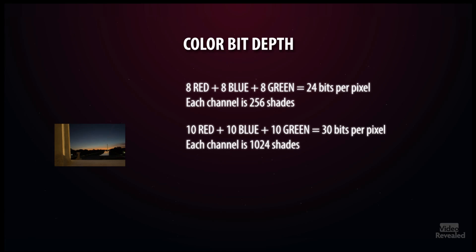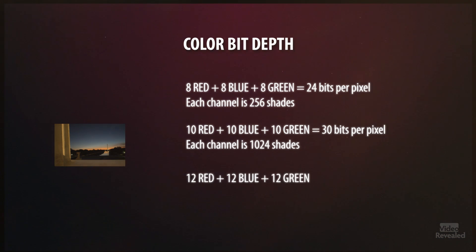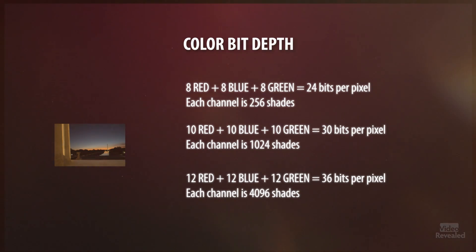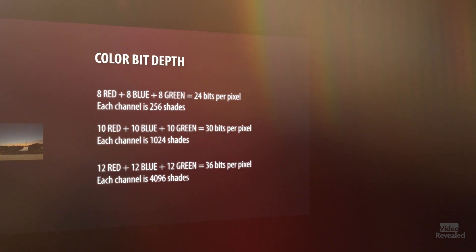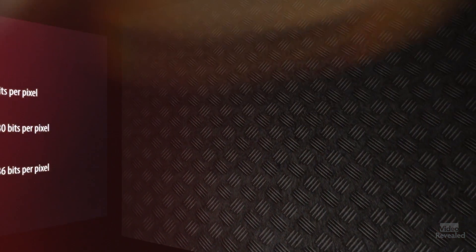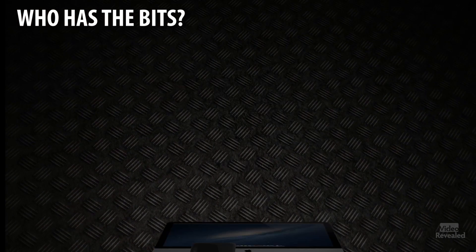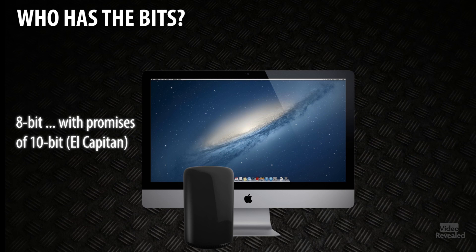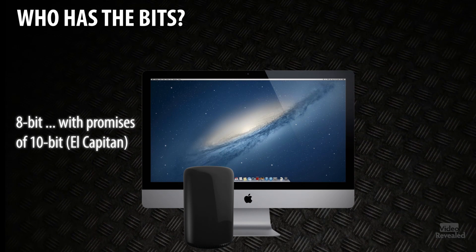If we look at cameras shooting in 12-bit, you've got 12 bits per channel — 12 red, 12 blue, 12 green equals 36 bits, and holy smokes: 4,096 shades. So who has the bits? Let's start with the computing platforms. OS X is 8-bit. There are promises to go to 10-bit with El Capitan, but no Adobe applications support that yet. 10-bit has been on Windows since Windows 7, and HP offers some great displays like the Dreamcolor display that are 10-bit.